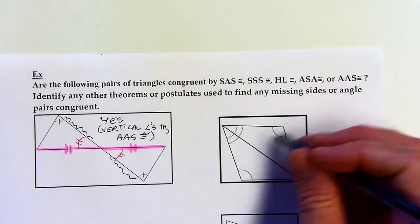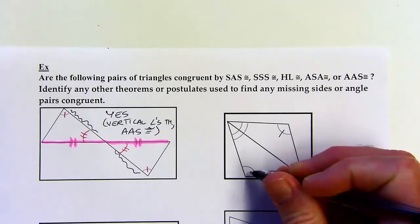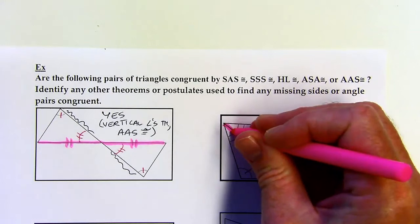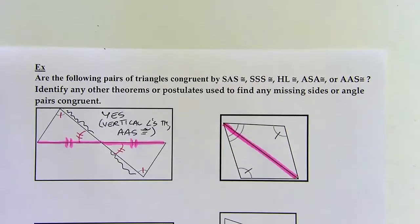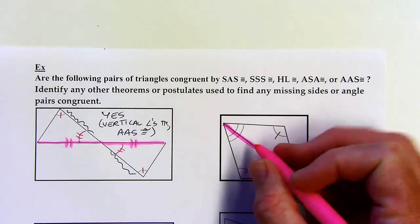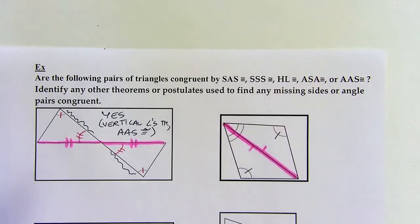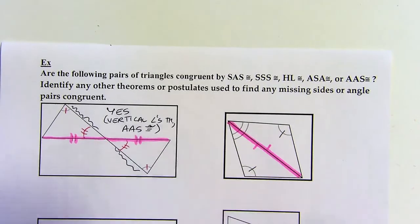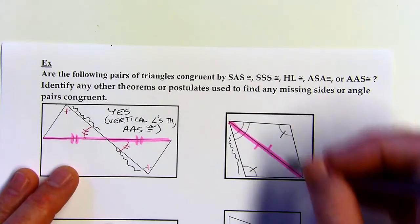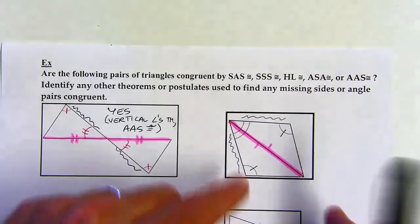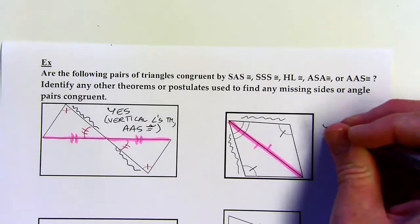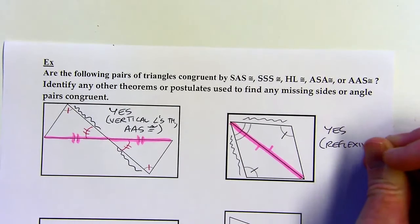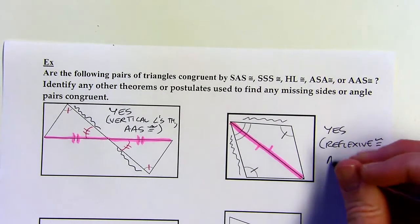This next one: I've got two pairs of angles congruent so far, but AA doesn't work. However, we can use this side because it's in both triangles — it's congruent to itself by the reflexive property. Now I've got two angles and a side. This is a non-included side; the included side in each triangle would be elsewhere. So yes, reflexive property of congruence and then AAS again.